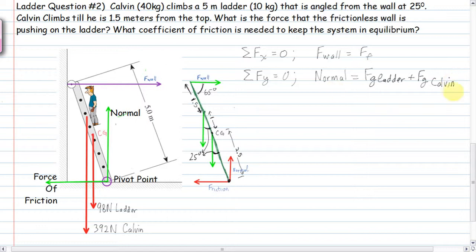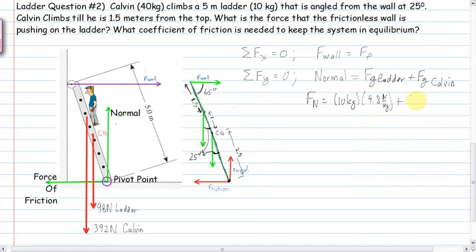Let's expand this with numbers. The normal force equals the force of gravity of the ladder — the ladder's mass is 10 kilograms times 9.8 Newtons per kilogram — plus the force of gravity of Calvin — Calvin weighs 40 kilograms times 9.8 Newtons per kilogram. When we multiply that all out, the normal force equals 490 Newtons.